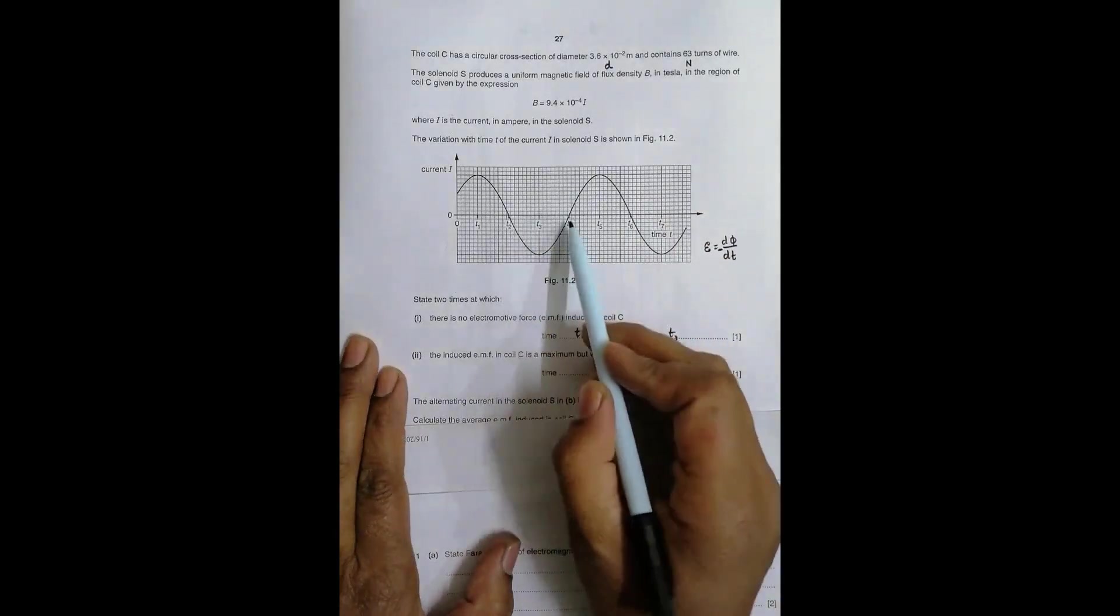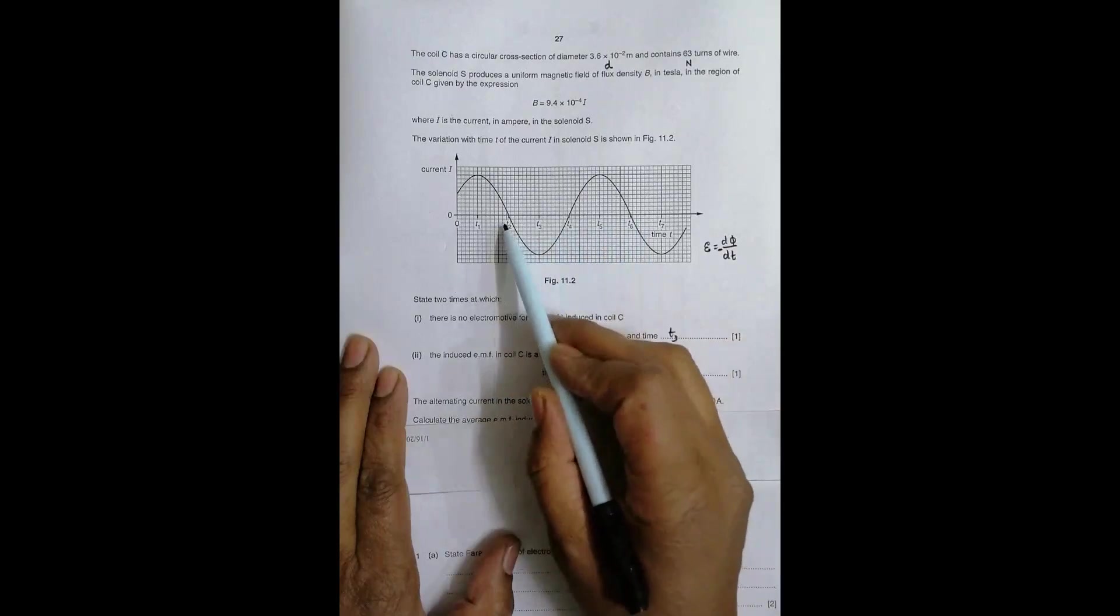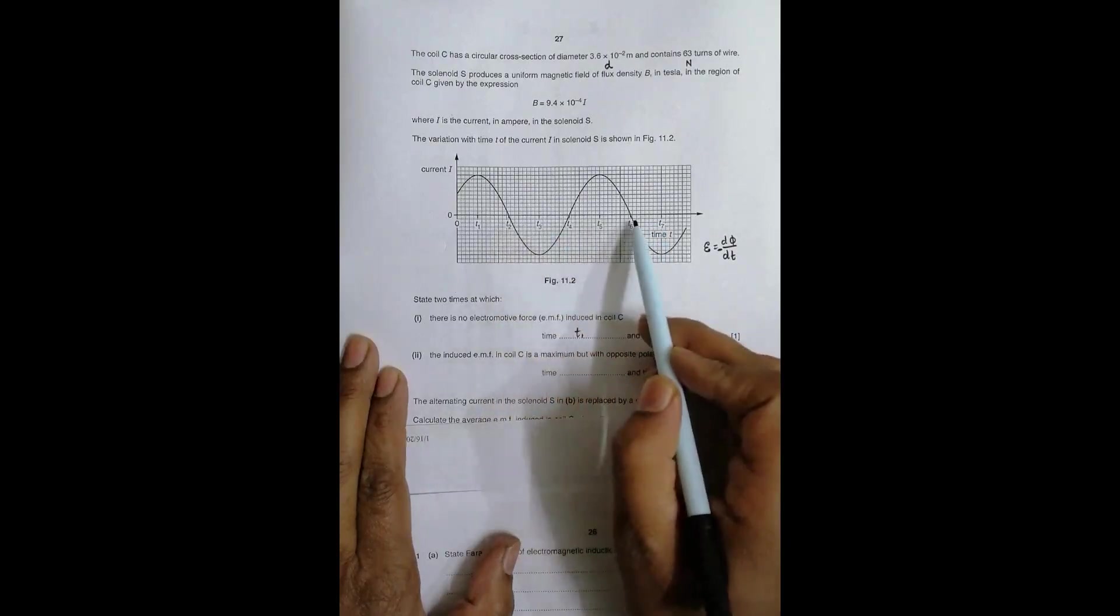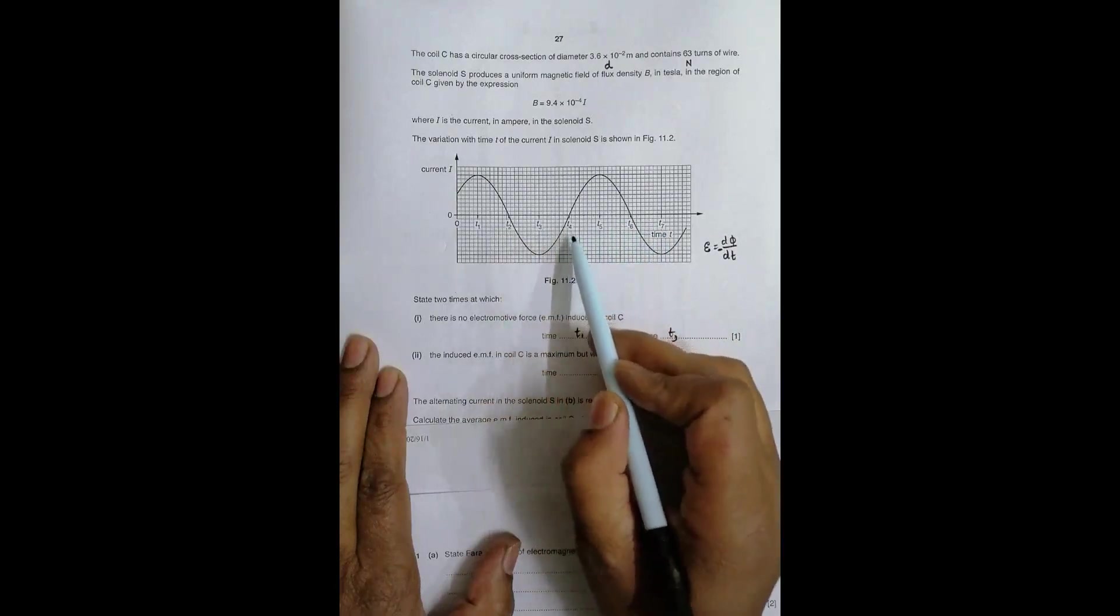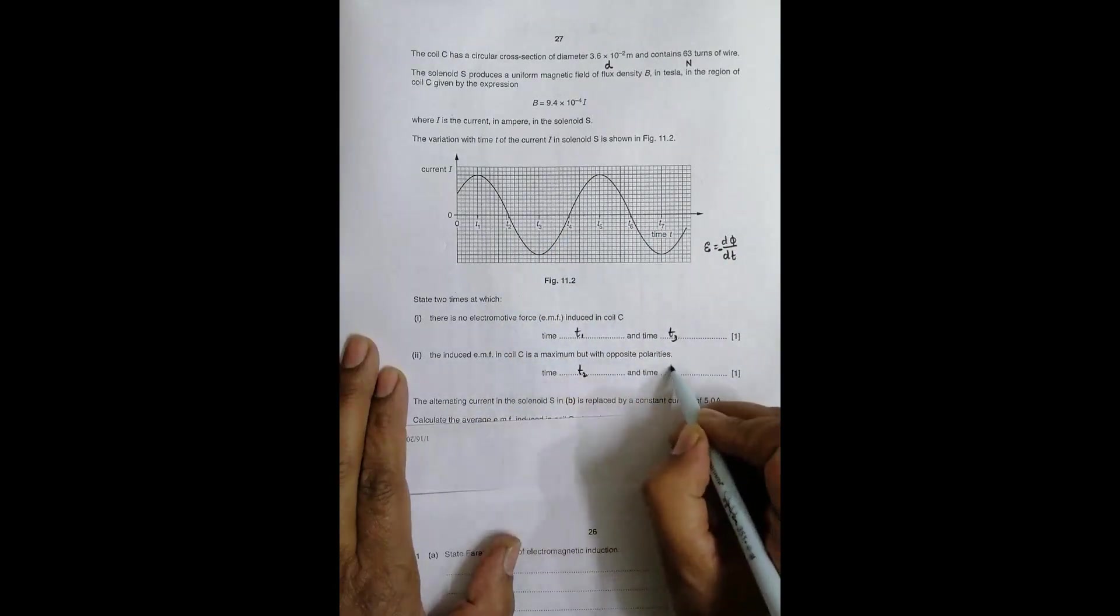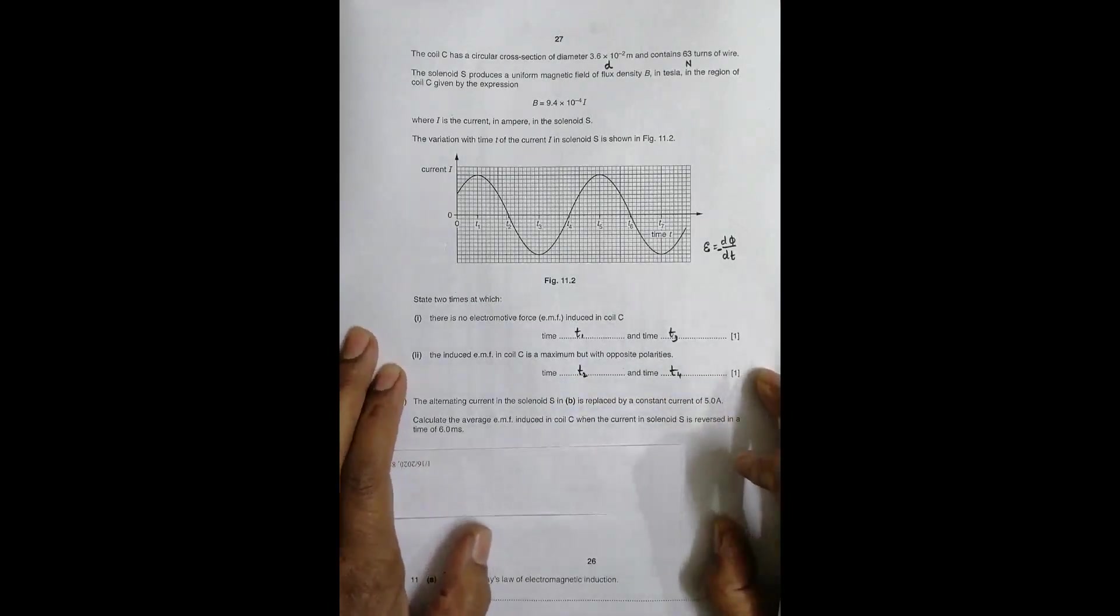We have to go for opposite ones. It should be either t₂ and t₄ where they're opposite, or t₄ and t₆. You can't use t₂ and t₆ because the direction of EMF will be the same. So either t₂ and t₄, or t₄ and t₆. The answer is t₂ and t₄.